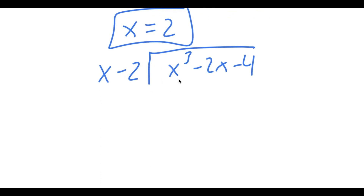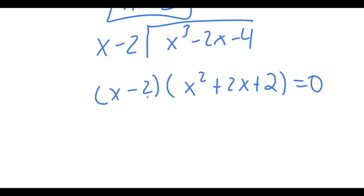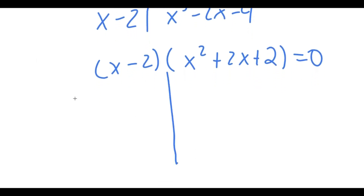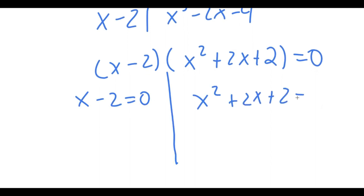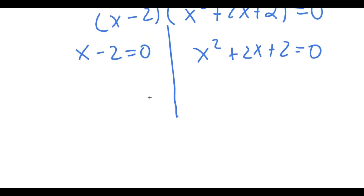If you do this division, you end up getting x minus 2 times x squared plus 2x plus 2 is equal to 0. This gives me two equations: x minus 2 equals 0, and x squared plus 2x plus 2 equals 0. For x minus 2 equals 0, x is obviously equal to 2.